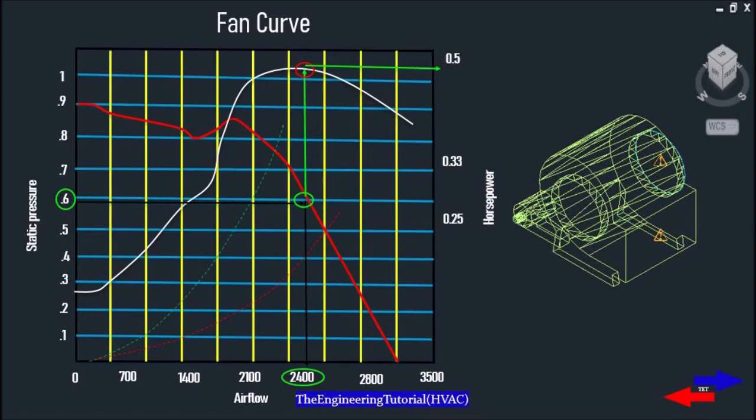fan connected to the system. It only delivers 2400 CFM of air at a static pressure of 0.6 inches of water column.